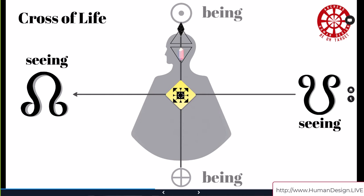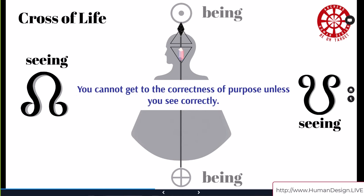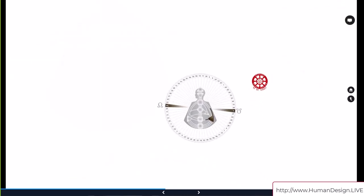Ra says, it's not simply a question of being correct in terms of your profile in this life. You cannot just get to the correctness of purpose unless you see correctly. And it is only through the nodes that you actually see. This is how we are attuned to what we are seeing.